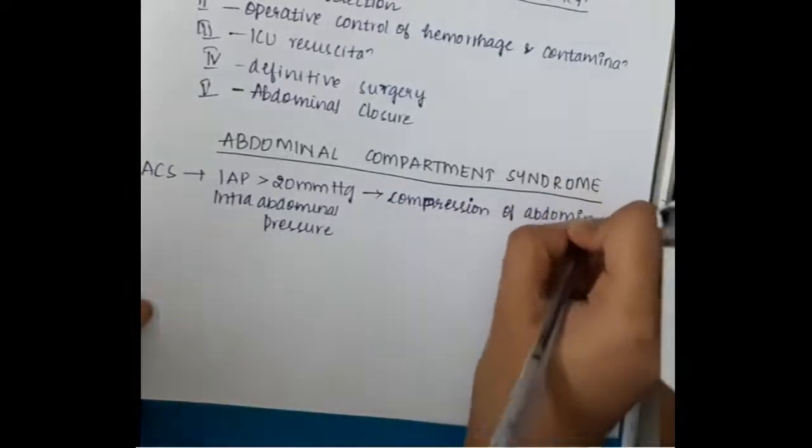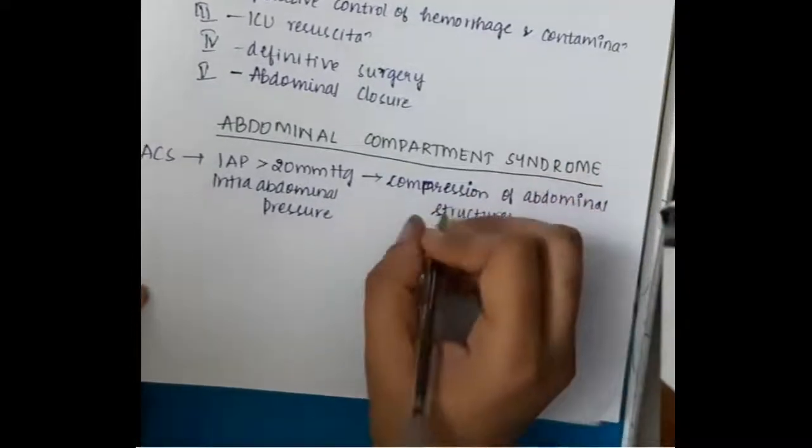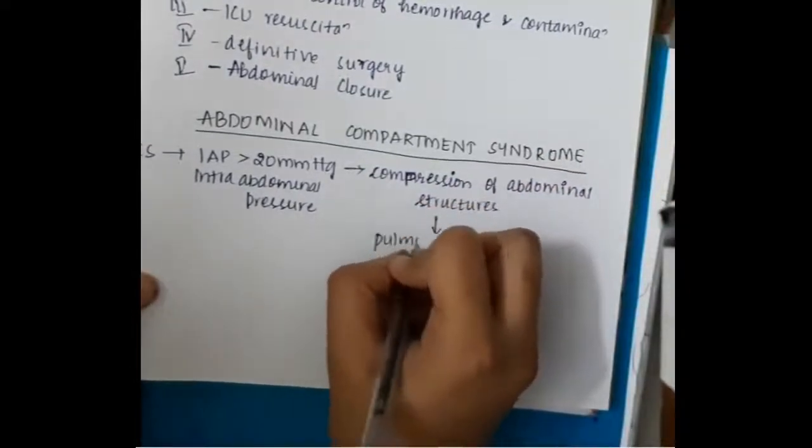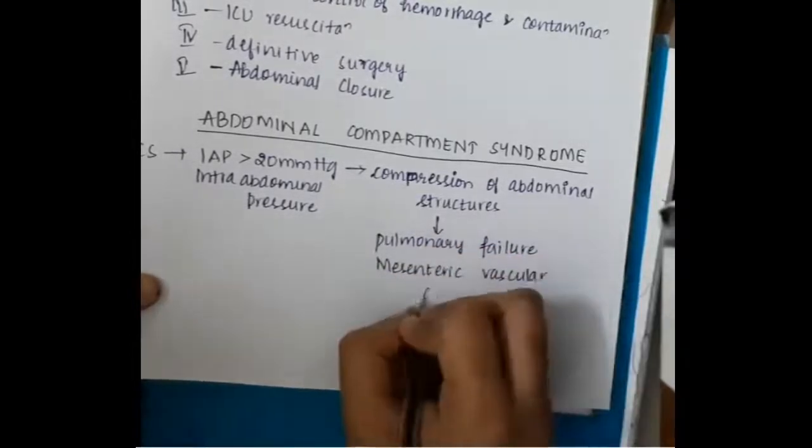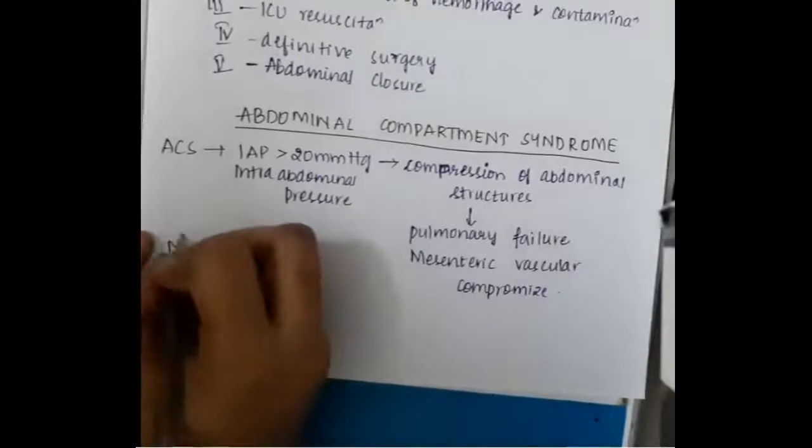At this high intra-abdominal pressure, the abdominal structures are compressed leading to pulmonary failure and also mesenteric vascular compromise. This is because when they compress the abdominal structures, the mesenteric vessels which are present in the omentum also get compressed leading to decreased blood supply to the abdominal organs causing ischemia.